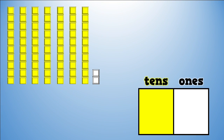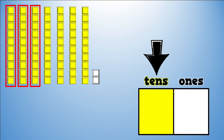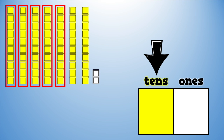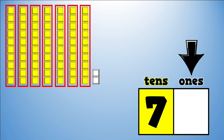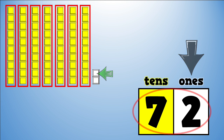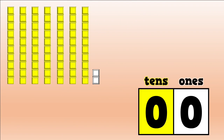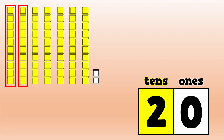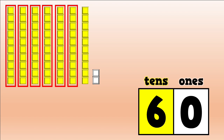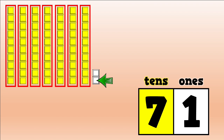Next number. How many groups of ten? One, two, three, four, five, six, seven. How many extra ones? One, two. What number is that? Seventy-two! Right! Skip count by tens and count on by ones to check: ten, twenty, thirty, forty, fifty, sixty, seventy, seventy-one, seventy-two. Yes!